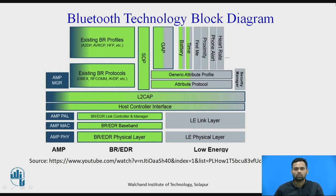Now we start with the Bluetooth Technology Block Diagram. In this block diagram, there are three different physical layers. The middle one is BR/EDR, that is Basic Rate or Enhanced Data Rate. To the left of that is AMP, that is Alternative MAC/PHY, and to the right of the classical variant is Bluetooth Low Energy.